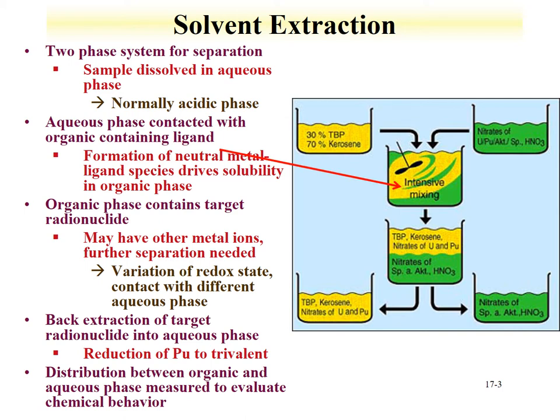Here's an example of where the mixing occurs. The two phases are mixed, allowing the chemistry to occur. Within solvent extraction processes, the ability to mix phases is important. As we'll see within the industrial-based PUREX process, there are a number of different routes for mixing the aqueous and organic phases. Once the separation has occurred, the organic phase receives the target radionuclides, while the aqueous phase is usually sent to waste.